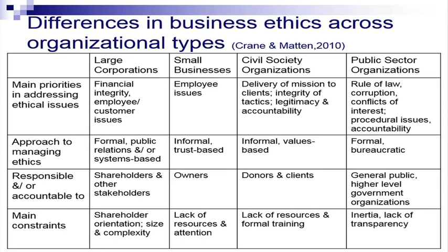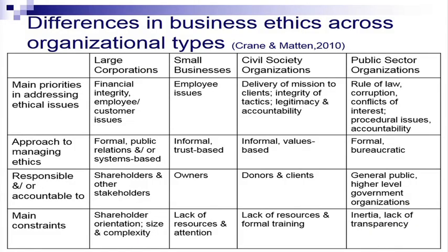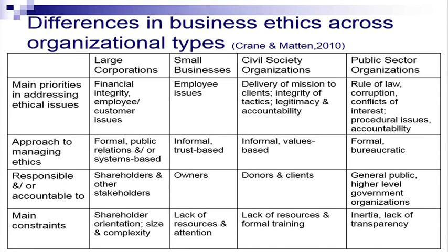The main priorities of large corporations in dealing with business ethics are financial integrity — money matters very much — and employee and customer issues. Small businesses are mainly concerned with employee issues, as they do not have too many complications with financial matters while stabilizing. Civil society organizations have a responsibility and are accountable to their clients to deliver the mission they exist for — integrity of tactics — and they need to be legitimate because many people are counting on them. Public sector organizations have to follow the law, take care of corruption, conflicts of interest, procedural issues, and be accountable to the community and other stakeholders.